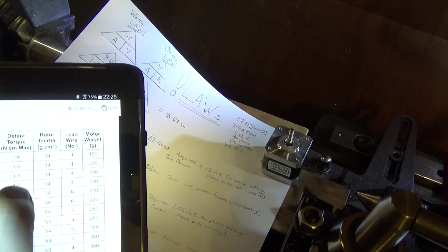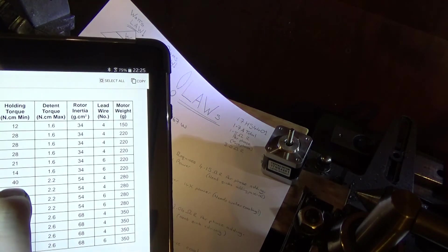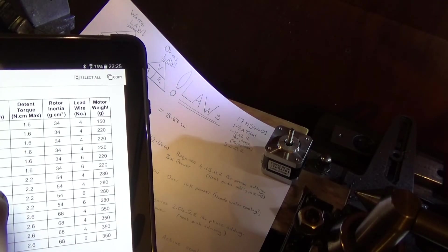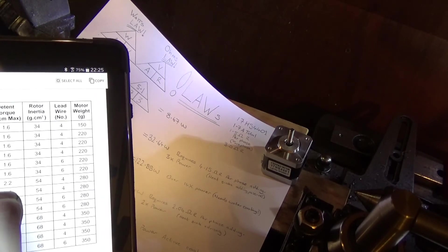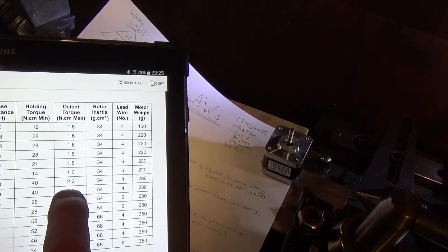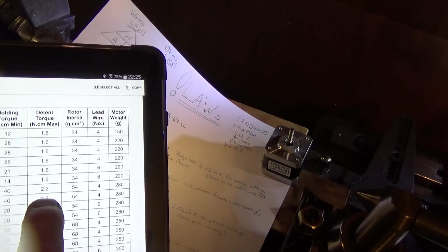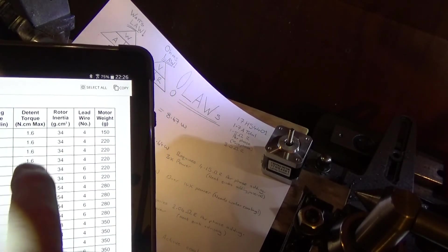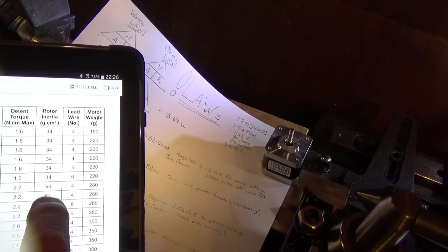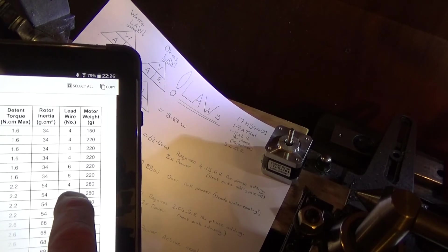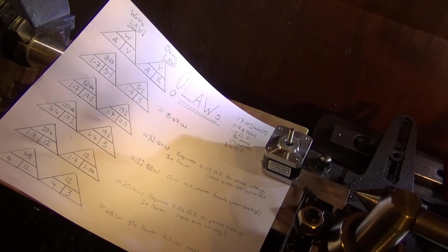Now you might want to get a NEMA 23, but let's see what that is going to bring me up to. We've got 40 newton centimeters, that would bring it up to 120 newton centimeters holding torque. Detent torque 2.2 newton centimeters, that would be 6.6 newton centimeters of torque. I don't think detent torque changes though. But yes, we could increase the power by threefold quite safely I think.